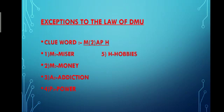An exception means a situation where the law is not applicable. The law assumes that as the stock of a particular product increases, the marginal utility decreases, and eventually you reach a point of satiety where you no longer want more of that product. This is the law of DMU, which is considered universal. But there are some situations and points where the law of DMU is not successful.